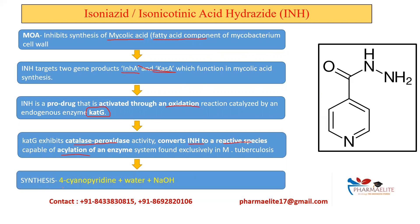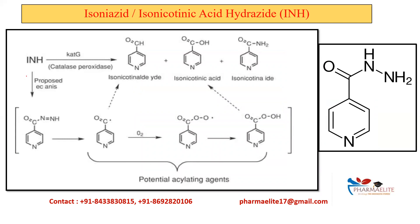Next is synthesis. For synthesis, you don't need to remember everything. If you know the basic moiety in the structure — the pyridine ring — that is more than enough to mark the correct answer. In GPED and NIPER, one option will have a pyridine ring while other options will have other heterocyclic rings, so you can mark the answer smartly. If two options look the same, the position of the group on the pyridine ring will vary — for example, 2-cyanopyridine, 3-cyanopyridine, or 4-cyanopyridine. The three active products after catalase peroxidase activity are isonicotinaldehyde, isonicotinic acid, and isonicotinamide — these are potent acylating agents.